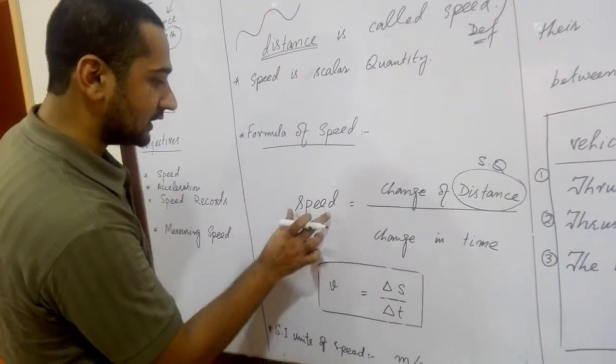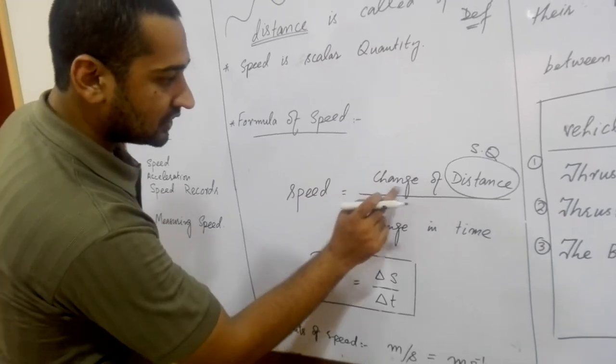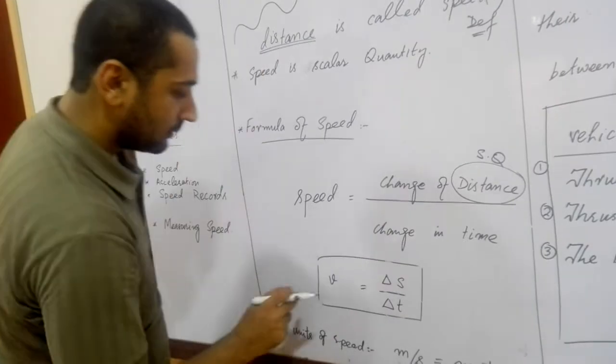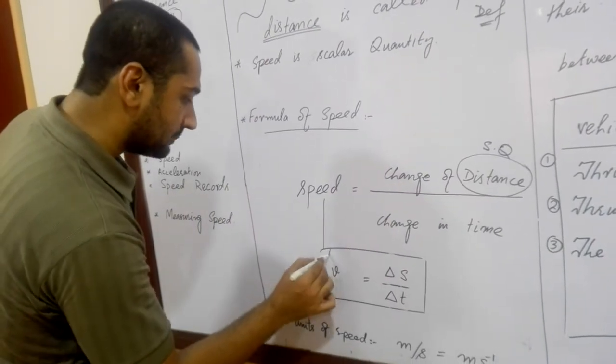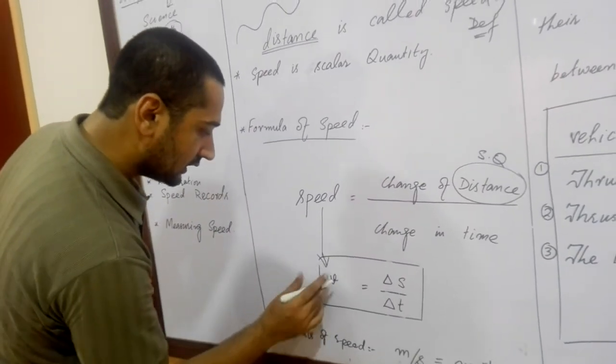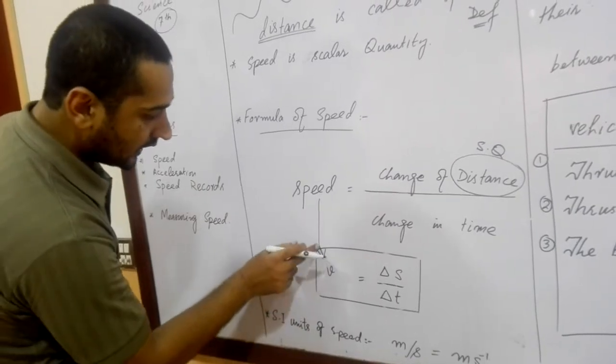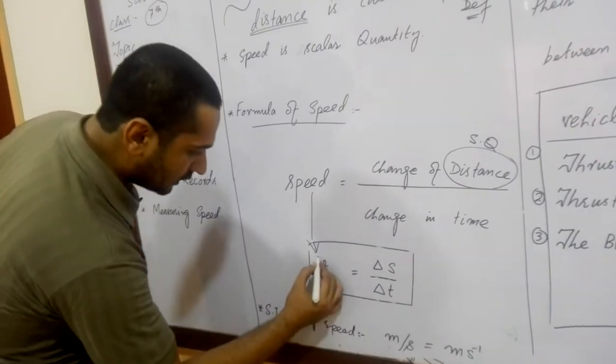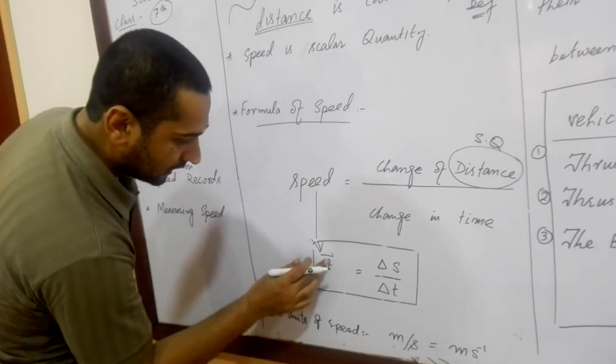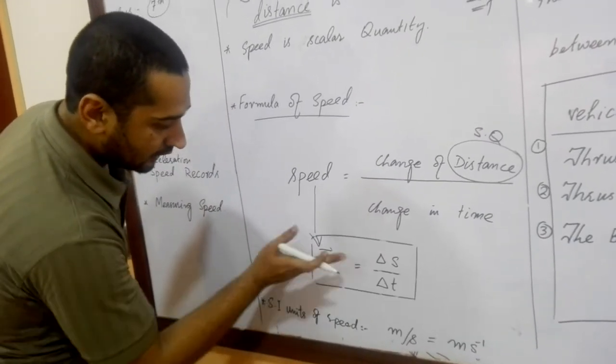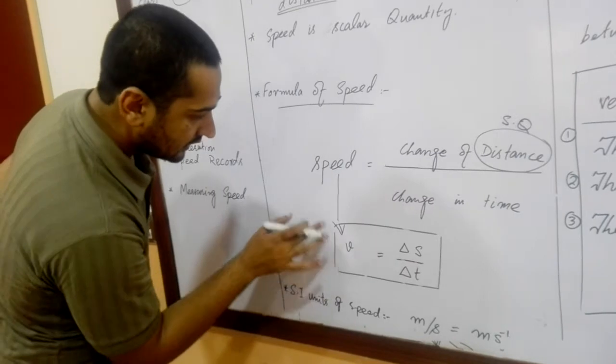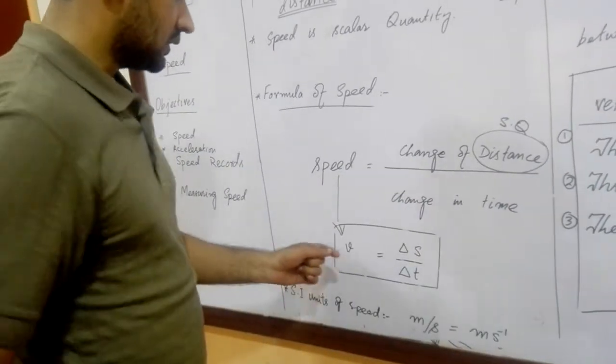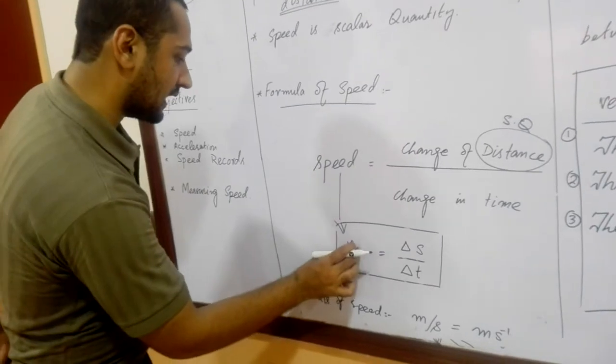And this is the formula: basically speed is equal to the change in displacement divided by change in time. The speed is represented by v, which is a similar symbol as velocity is represented by small v, but by placing the arrow head. But speed is without arrow on it, which shows the speed.